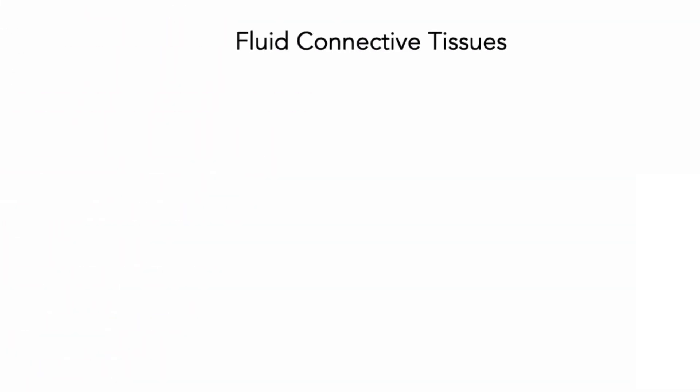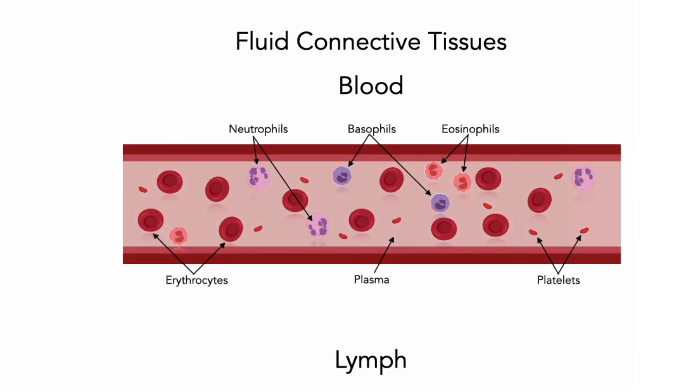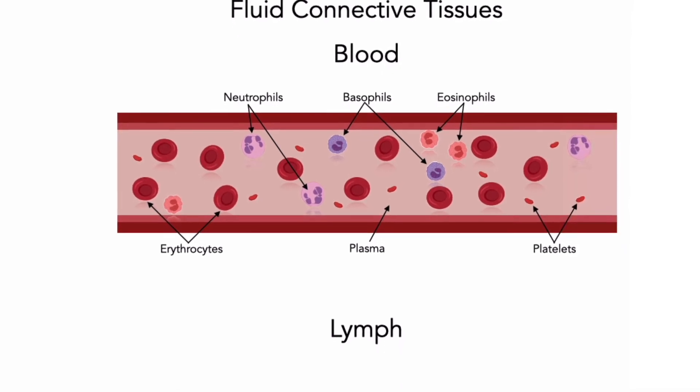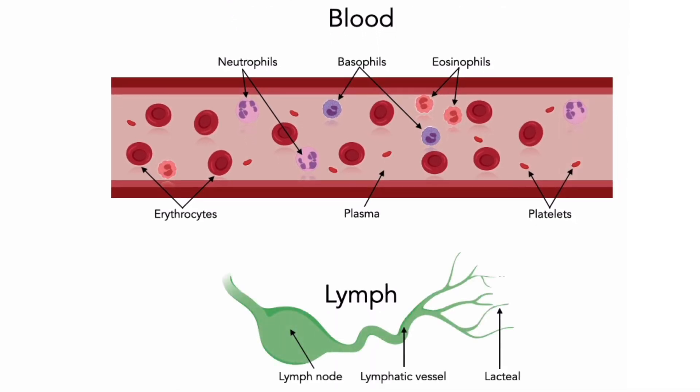Next, fluid connective tissues. Blood and lymph are connective tissues that contain distinctive collections of cells in a fluid matrix. The proteins of the ground substance are large, soluble proteins, except under unique conditions such as during blood clotting. In blood, the watery extracellular matrix is called plasma. A single cell type, the red blood cell, accounts for almost half the volume of blood and transports oxygen. Blood also contains small numbers of white blood cells, important cells of the immune system, and platelets, which are cell fragments that play a role in blood clotting. Together, plasma, lymph, and interstitial fluid make up most of the extracellular fluid of the body.